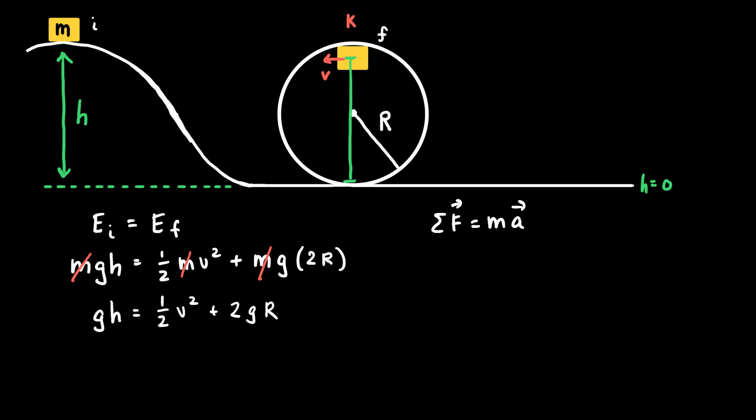And at that moment, the cart will experience two forces. One of those forces is due to its weight, mg, and one of those forces is a normal force, which is the force from the track exerted on the cart, which is also downwards.